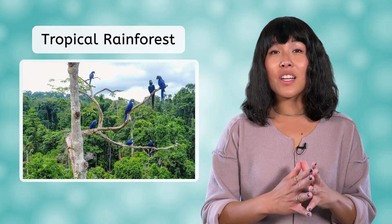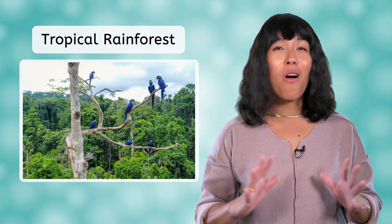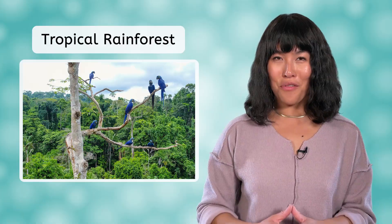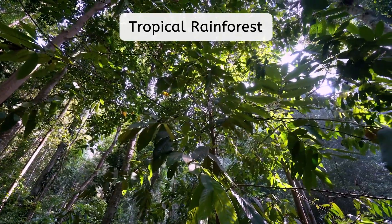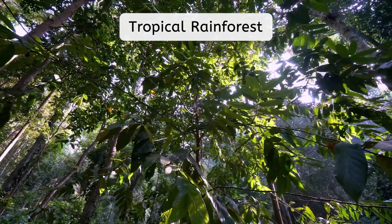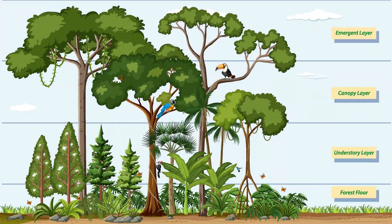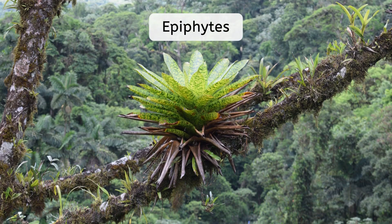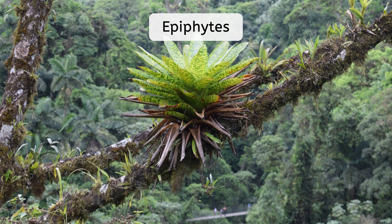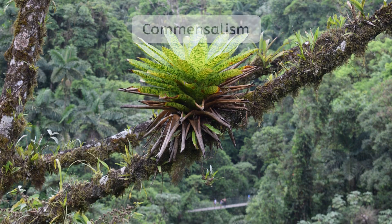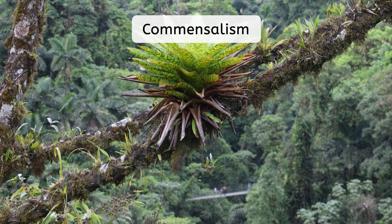The tropical rainforest biome exists in regions near the equator of Earth, where it stays warm all year and there is abundant rainfall. These two climate factors make it relatively easy for life to flourish, so we see a wide variety of plants, animals, and other life forms here. The vegetation includes tall trees that form a dense canopy layer, as well as an understory of shorter trees, shrubs, and vines above the forest floor. These forests are home to a wide range of plant species, including epiphytes, which are plants that grow on other plants without harming them — a form of commensalism.